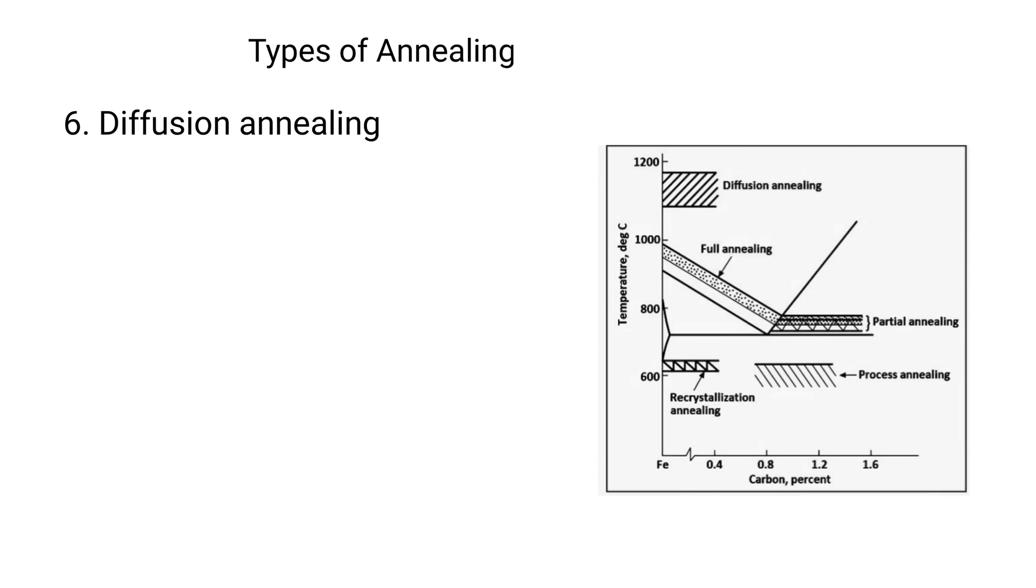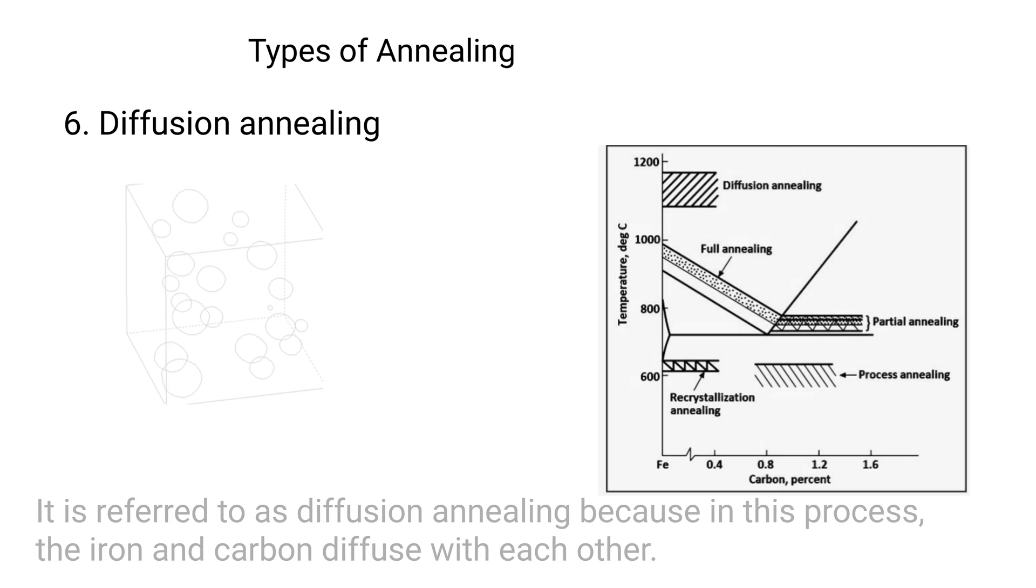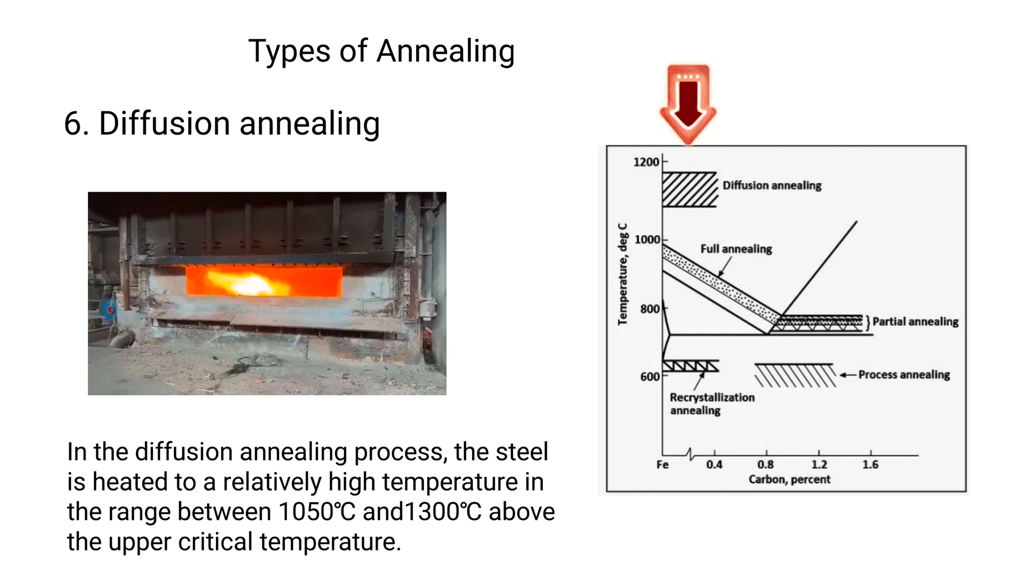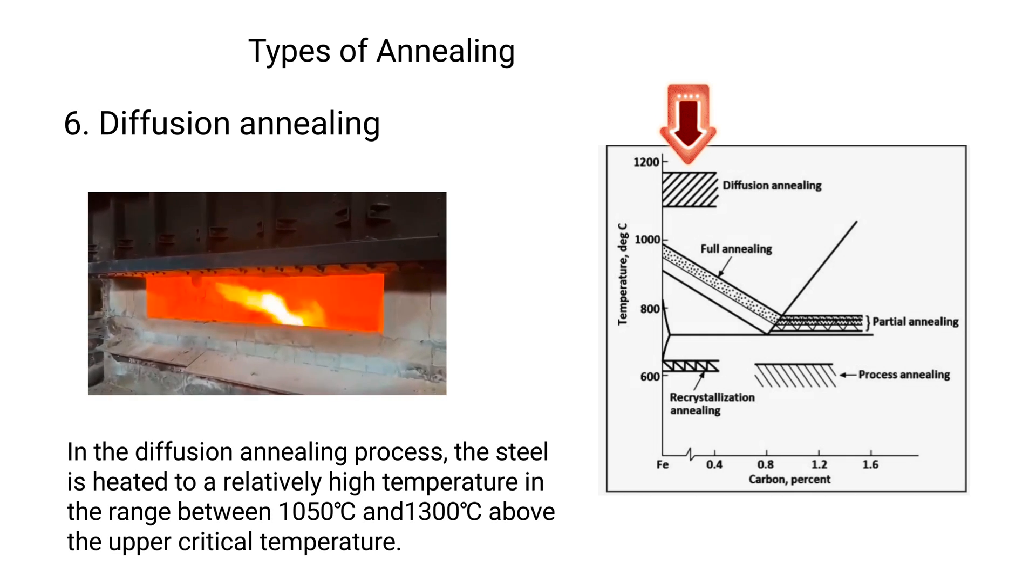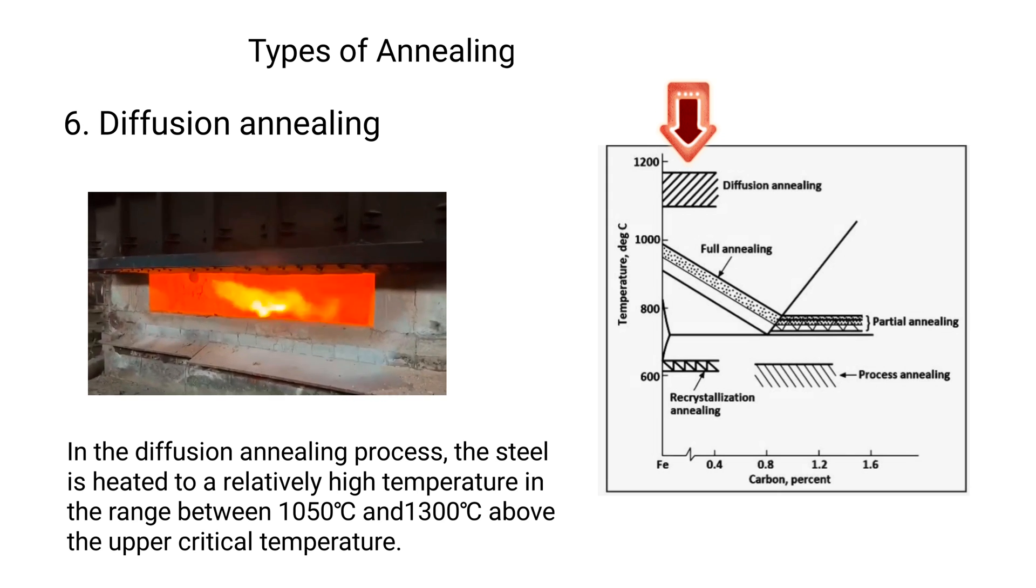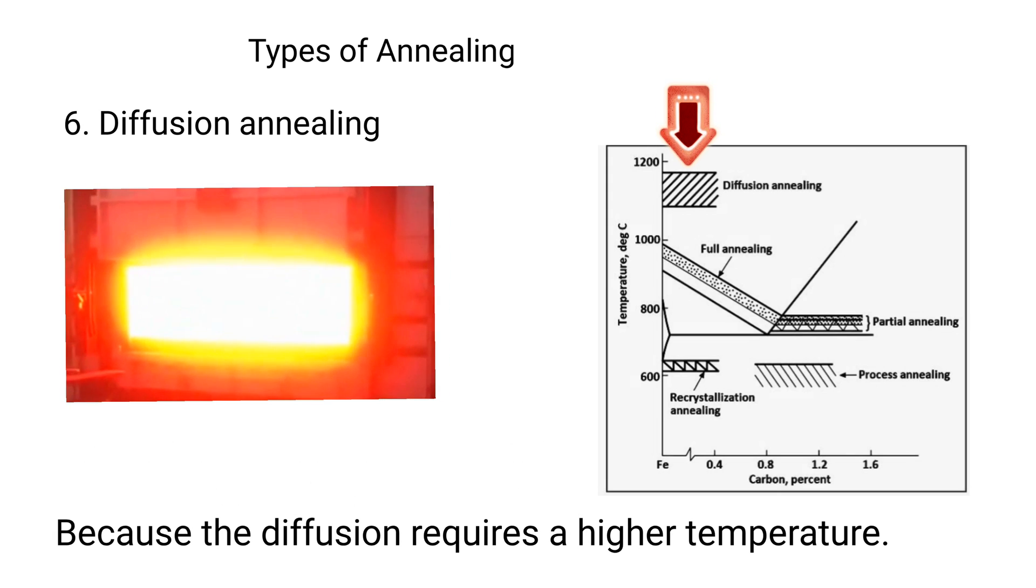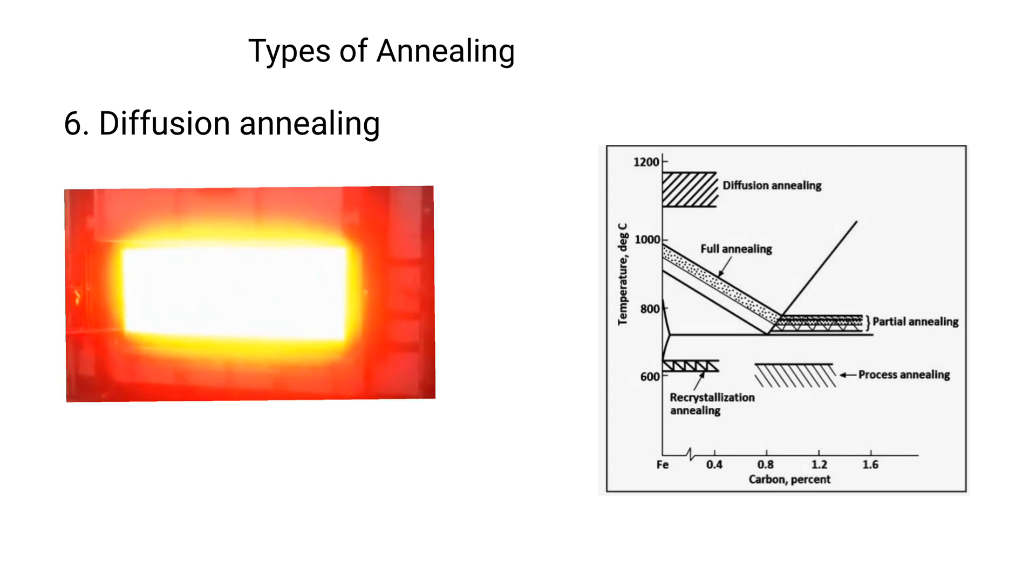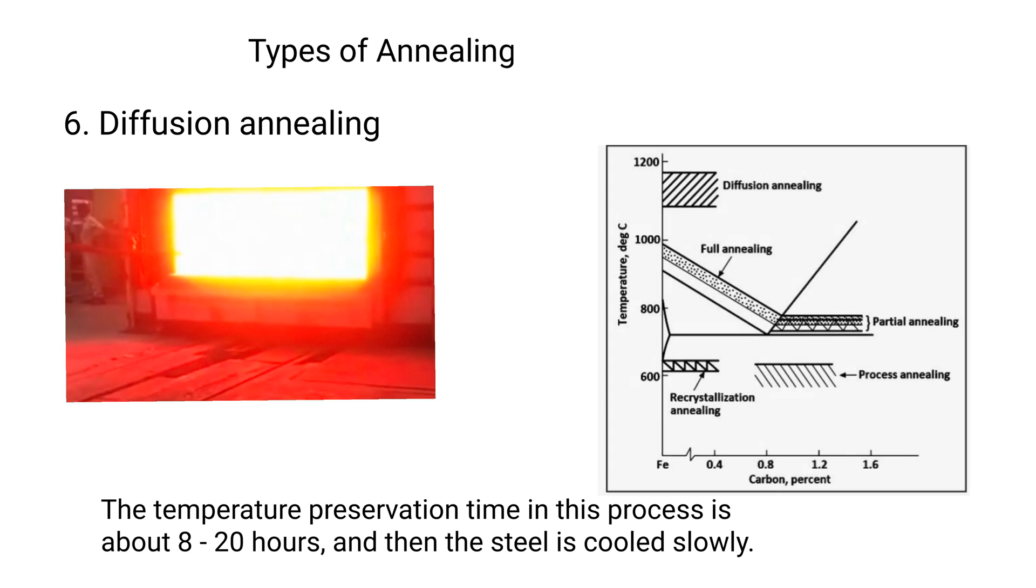6. Diffusion annealing. It is referred to as diffusion annealing because in this process, the iron and carbon diffuse with each other. In the diffusion annealing process, the steel is heated to a relatively high temperature in the range between 1050 and 1300 degrees Celsius, above the upper critical temperature, because the diffusion requires a higher temperature. The temperature preservation time in this process is about 8 to 20 hours, and then the steel is cooled slowly.